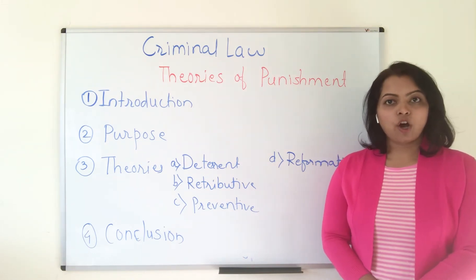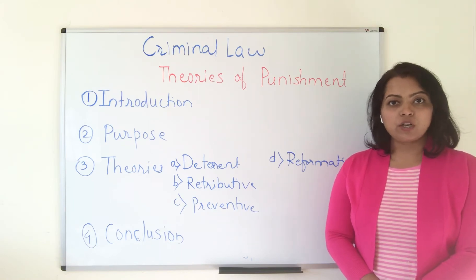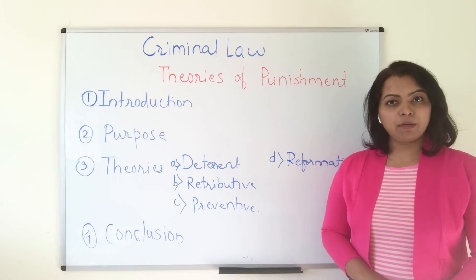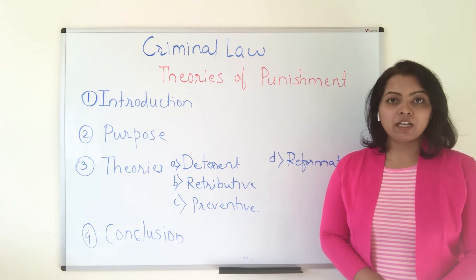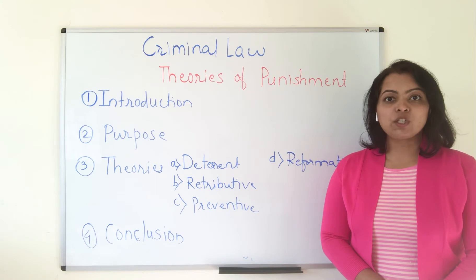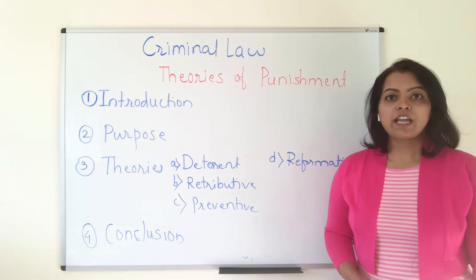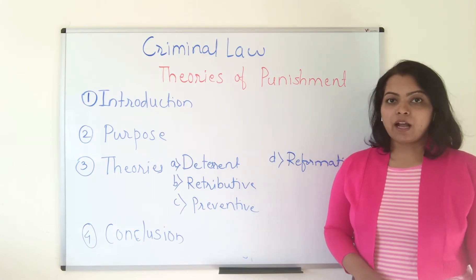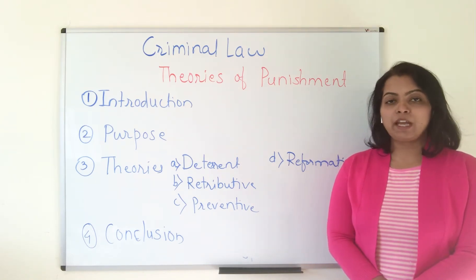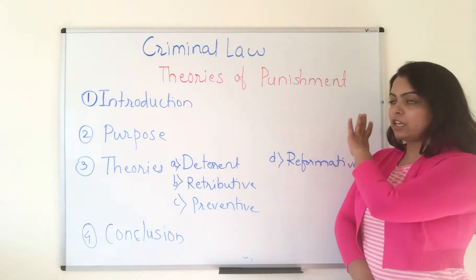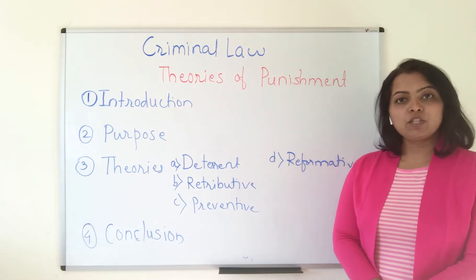So in every country, criminal law is a necessity and it is a duty of criminal law to take care of the law and order situation in that country. The basic purpose of criminal law is to punish the wrongdoer. The word punishment comes from the word 'penal,' and that's why the name is Indian Penal Code — penal means which deals with punishments. There are some theories on the basis of which punishment can be given to a wrongdoer, and today we are going to learn four major theories.